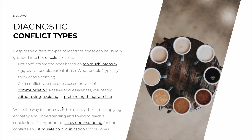While the general way to address both of these is usually the same — and we're going to take a look at it — including techniques such as applying empathy, showing respect, making the person feel understood, and trying to reach an equitable conclusion for both sides, it's important to add an extra layer of understanding in hot conflicts so that you can slowly calm down an aggressive person and bring them back down to the realm of logic, so that they're reasonable. And for cold conflicts, to proactively stimulate communication, because the person is going to withdraw, and you need to be the one to slowly bring them out.